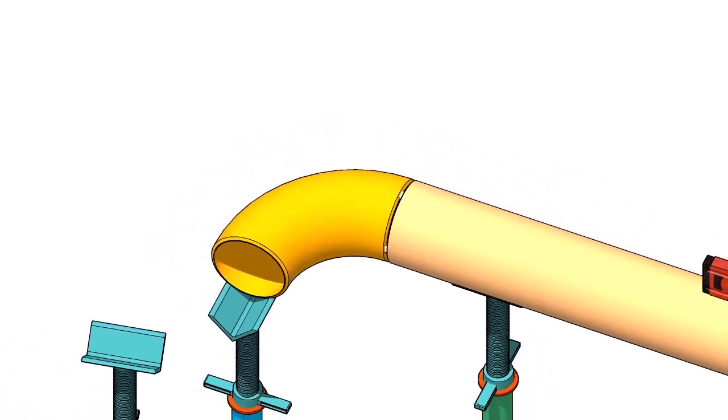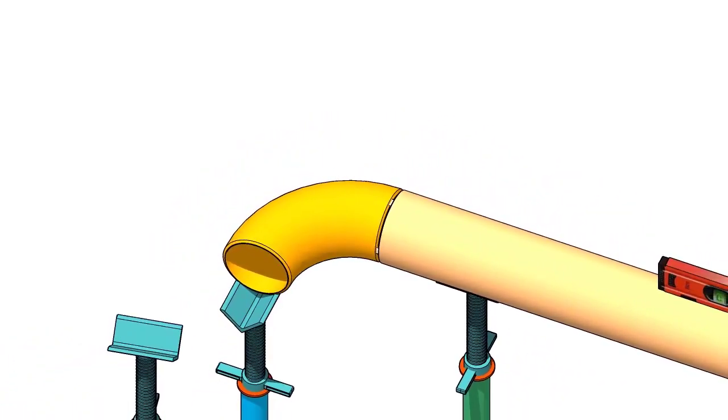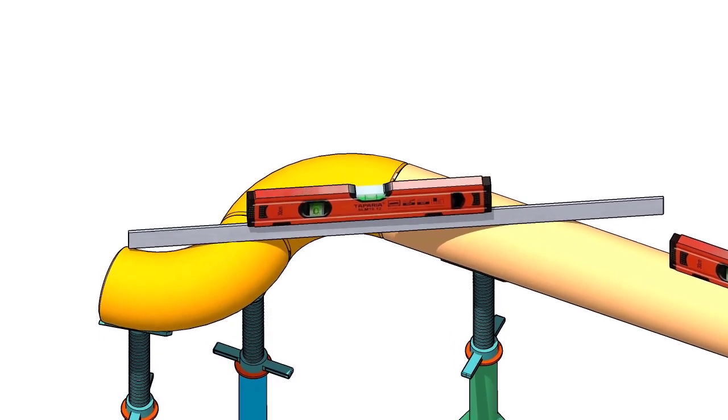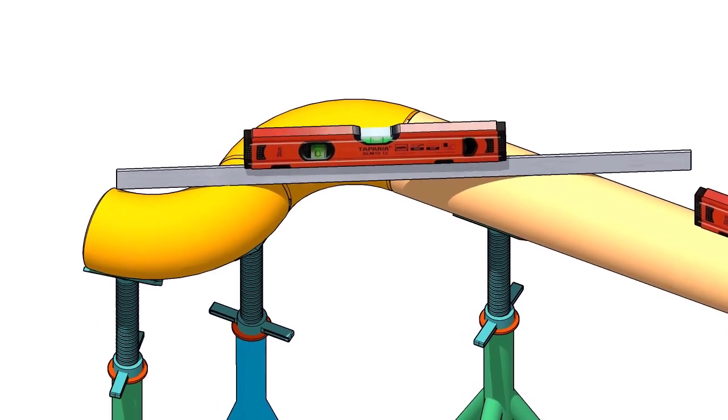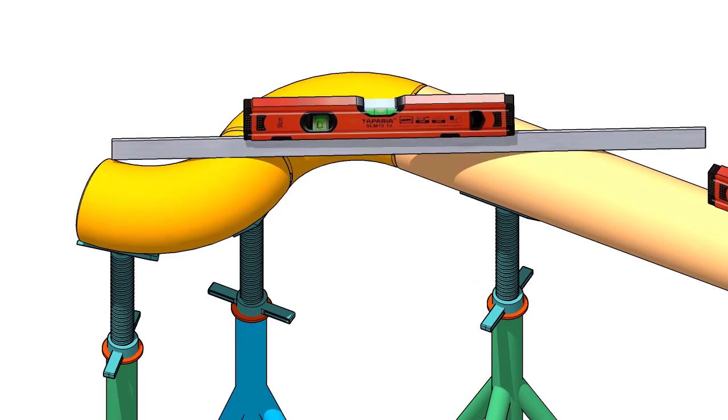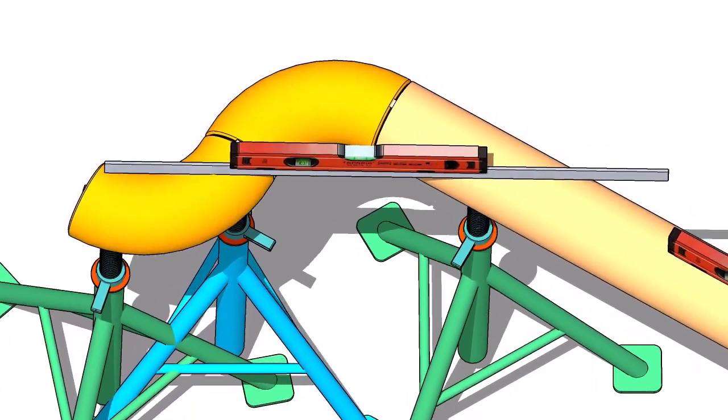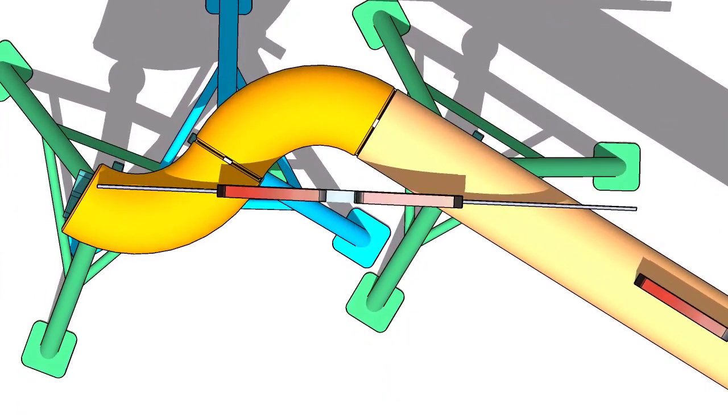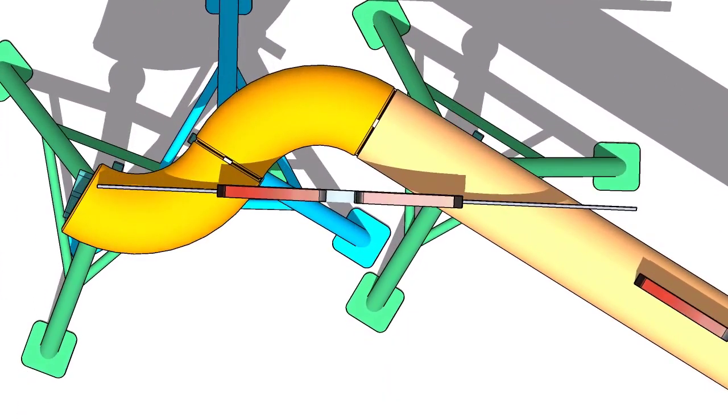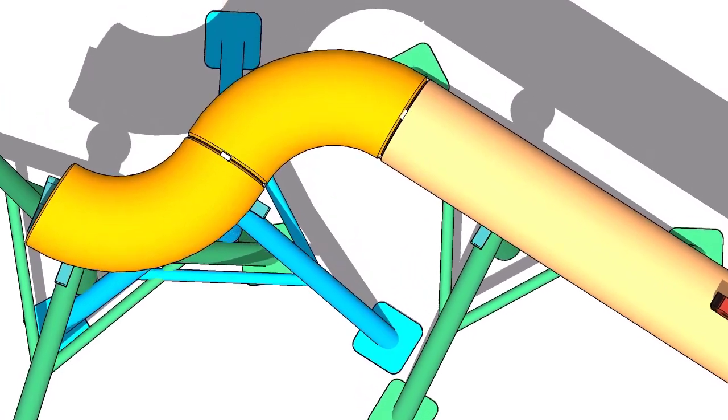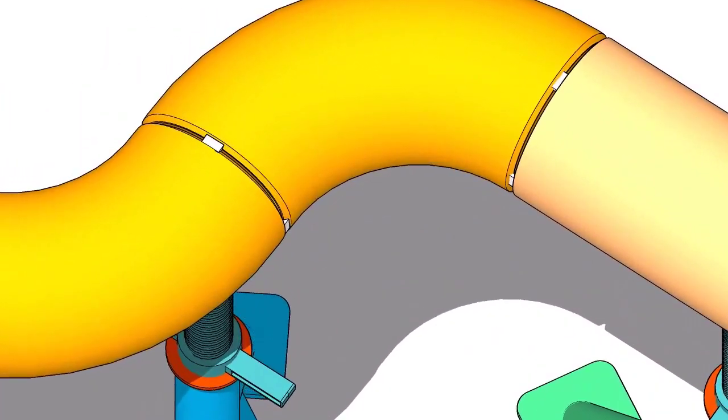Put the elbow on the stand and check the level. Use a straight edge and a spirit level. Check the face level of the elbow. Tack weld on the top and the bottom.